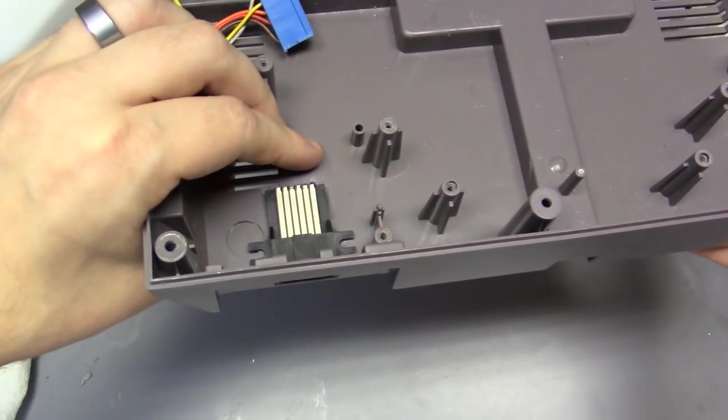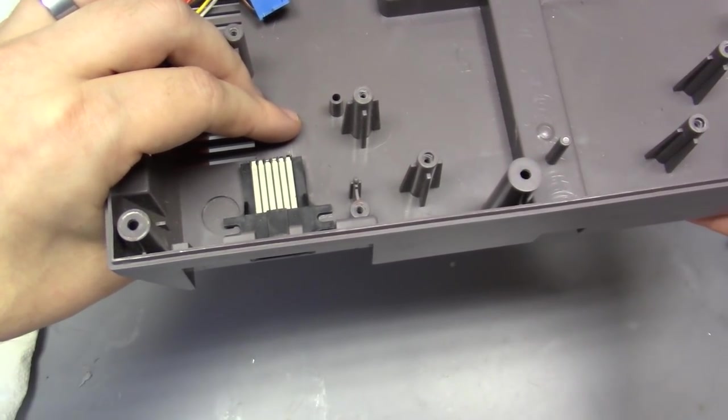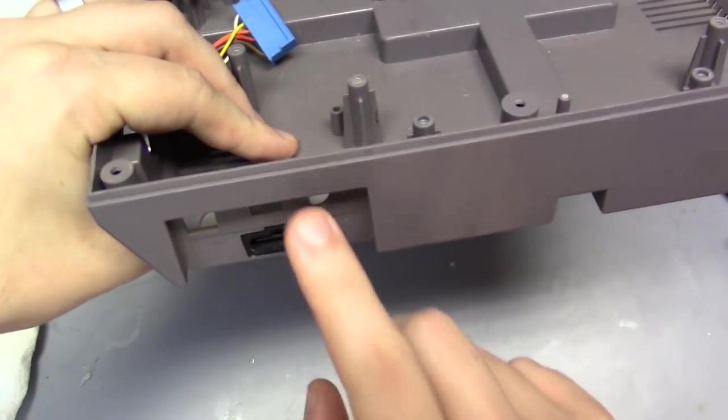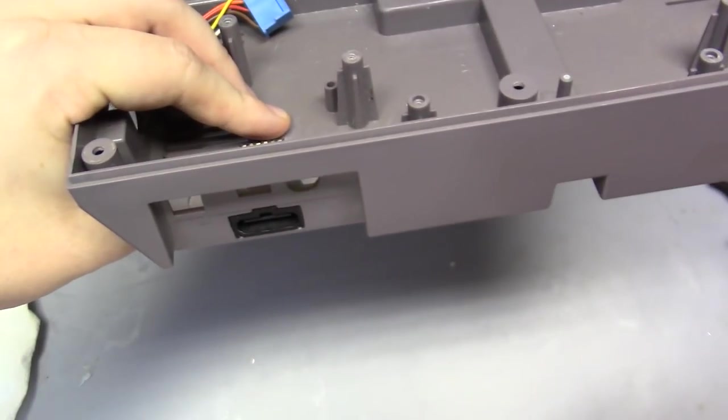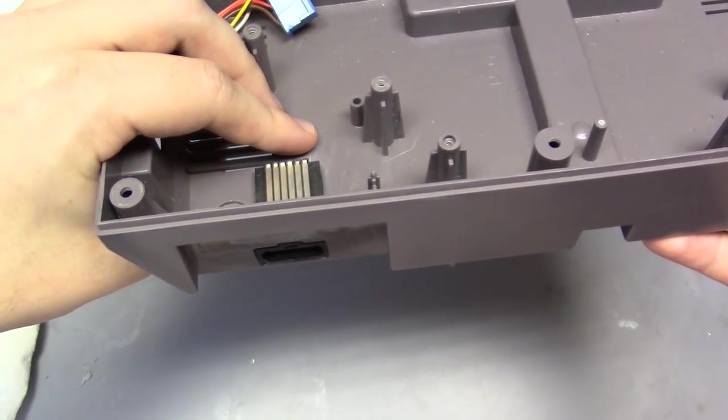It simply isn't designed to hold up for that kind of application. The ideal plating for mechanical connectors like that would be hard gold. Keep that in mind when purchasing any kind of homebrew or third-party device that cycles, whether it be a cartridge PCB or a multi-out like we have here.